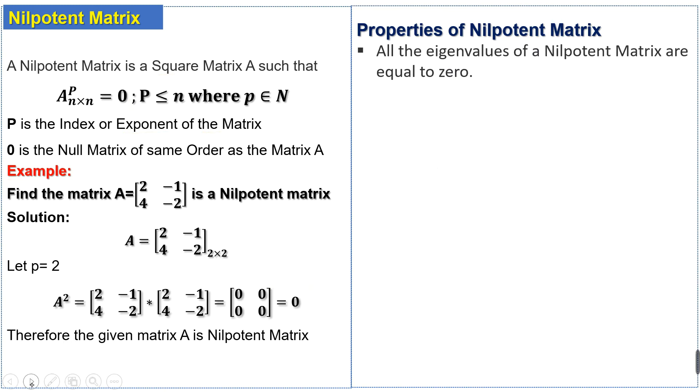Some properties of the nilpotent matrix: all the eigenvalues of a nilpotent matrix are equal to 0. The determinant or the trace of the nilpotent matrix is always 0. Here we can see that the trace of 2 plus minus 2 is equal to 0.